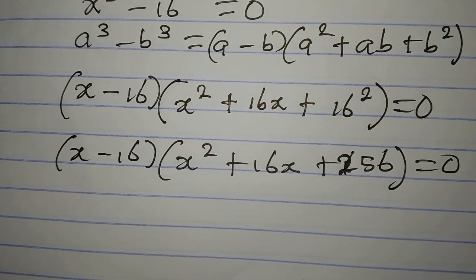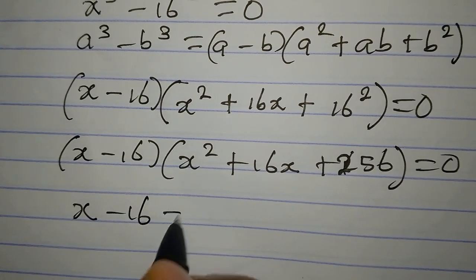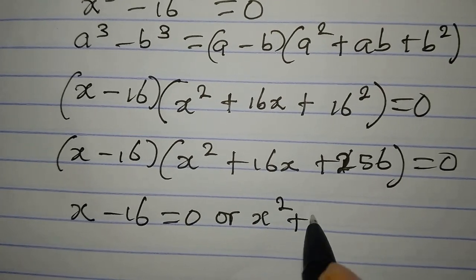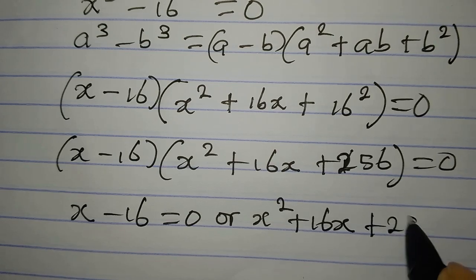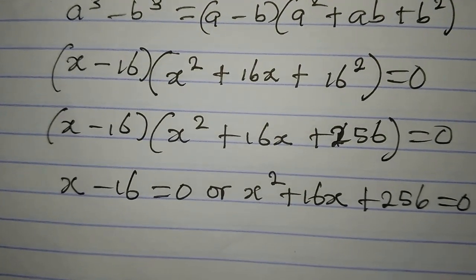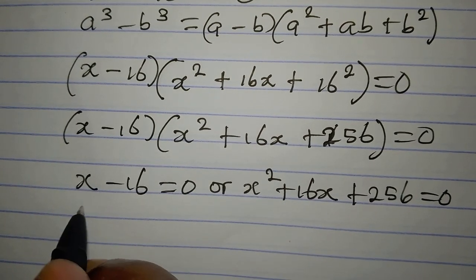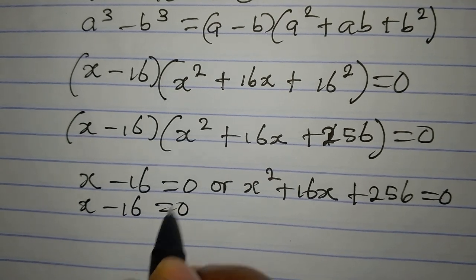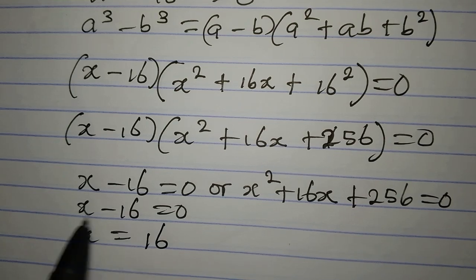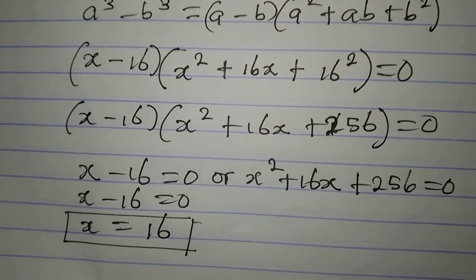We apply the zero product rule: either x minus 16 equals zero, or x squared plus 16x plus 256 equals zero. From the first factor, x minus 16 equals zero gives us x equals 16. This is the first value of x and it is a real value.